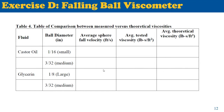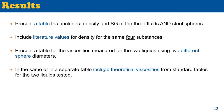Once you collect the data, prepare a table comparing measured versus theoretical viscosities. In the results, present a table that includes the density and specific gravity of the three fluids and the density of the steel sphere. Also include literature values for the density of the four substances: water, glycerin, castor oil, and stainless steel. Present a table of viscosities measured for the two liquids using two different sphere diameters, and include theoretical viscosity from standard tables or literature.